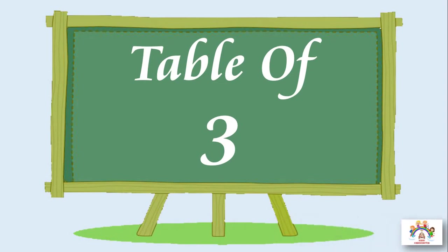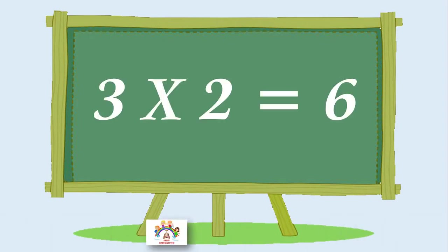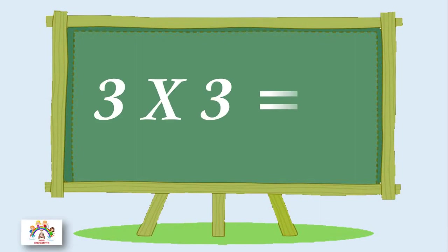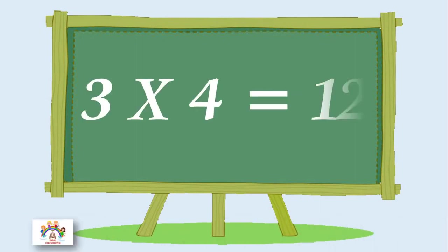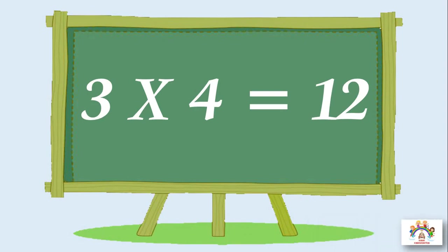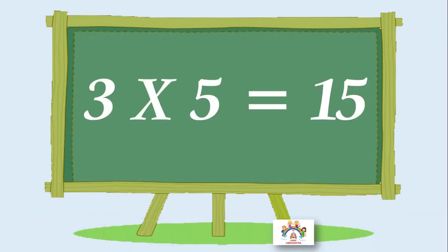Table of three. Three ones are three, three ones are three. Three twos are six, three twos are six. Three threes are nine, three threes are nine. Three fours are twelve, three fours are twelve. Three fives are fifteen, three fives are fifteen.